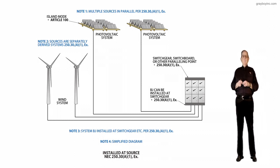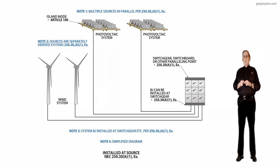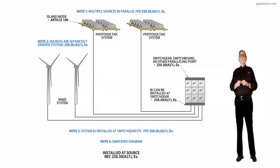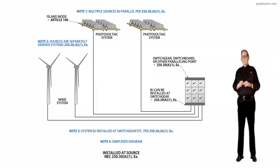And then when you look at note two, sources are separately derived systems in accordance with 250.30A1 exception. And then notice if you had, say, an island mode for those PV systems, you'd see Article 100, and it explains what an island mode is where we were having some problems in the past determining exactly what that was.